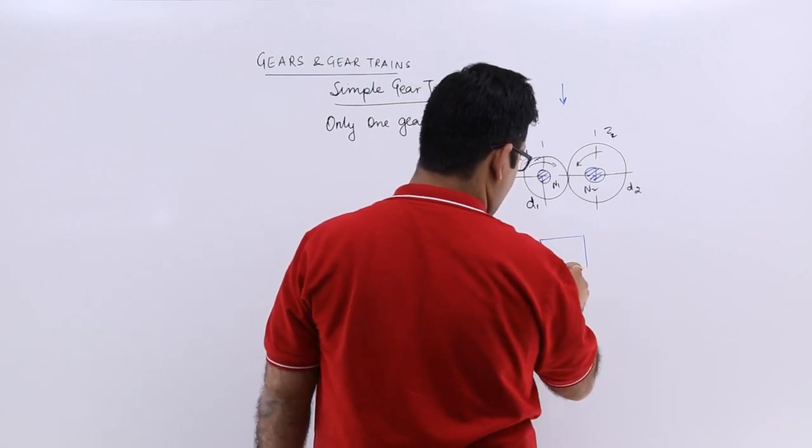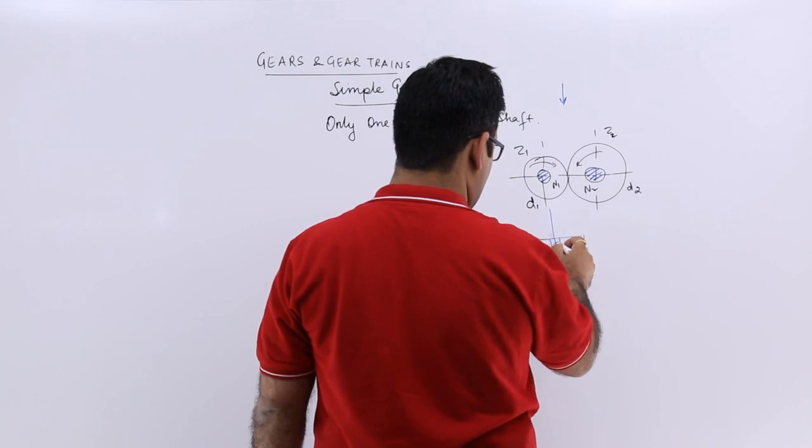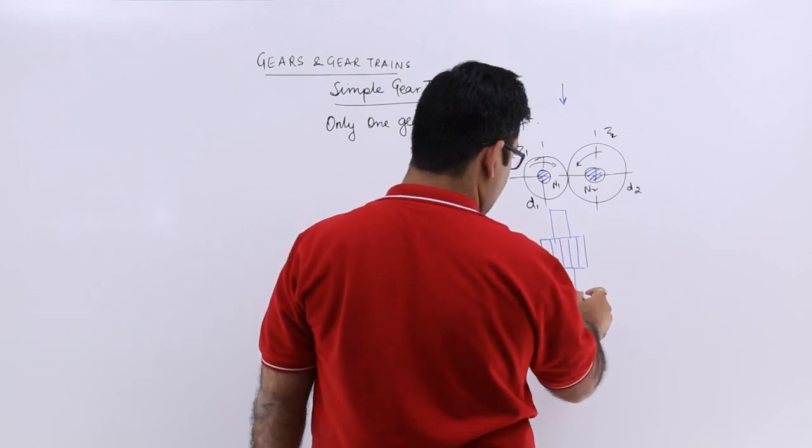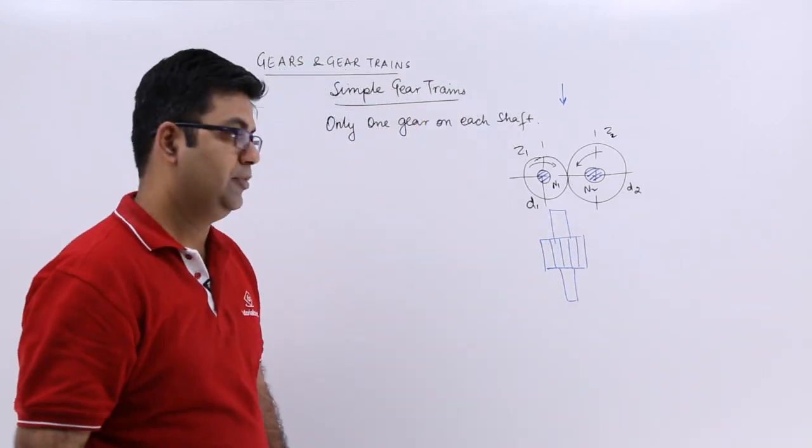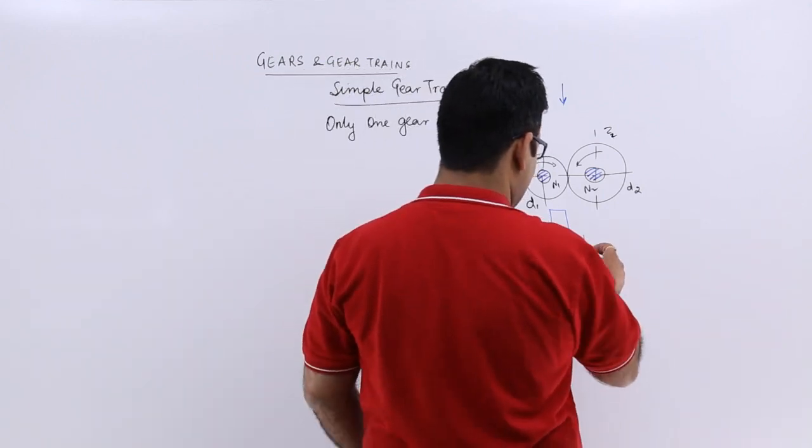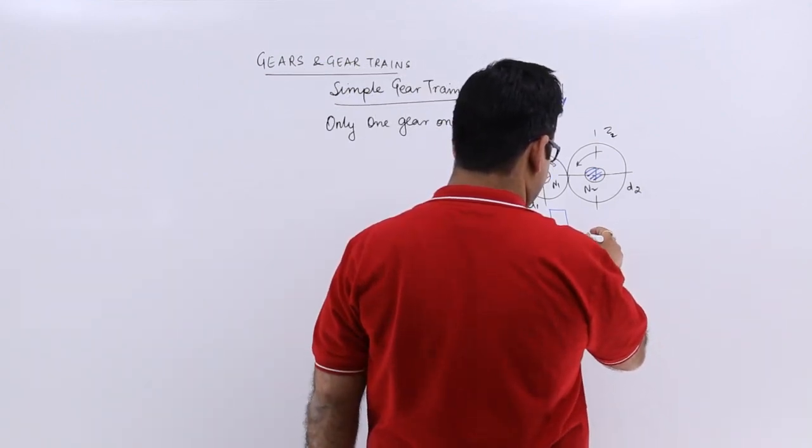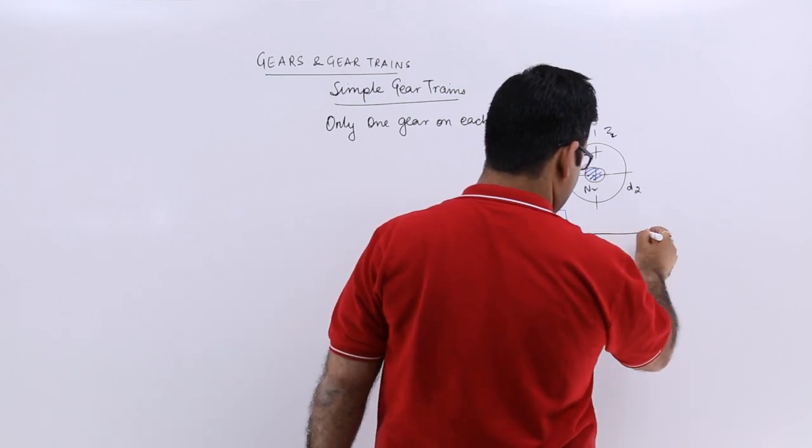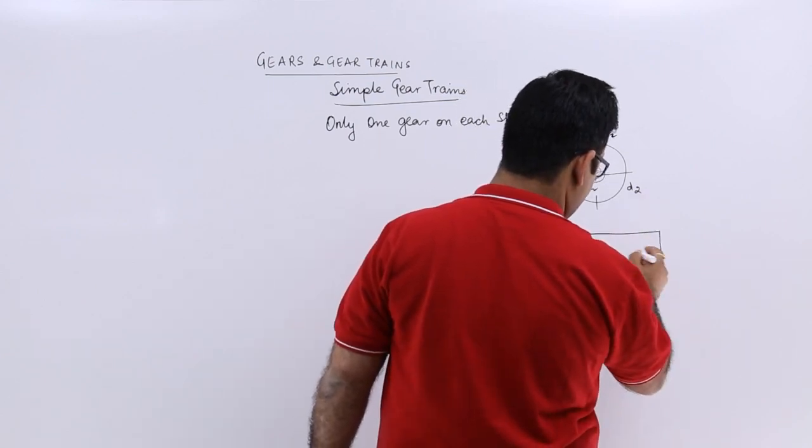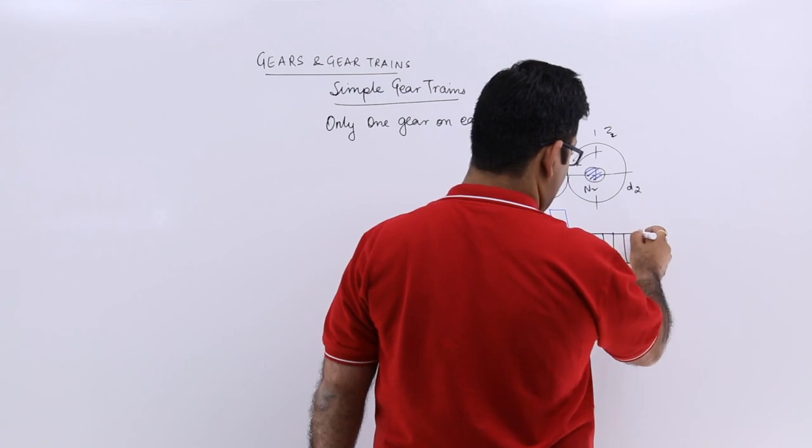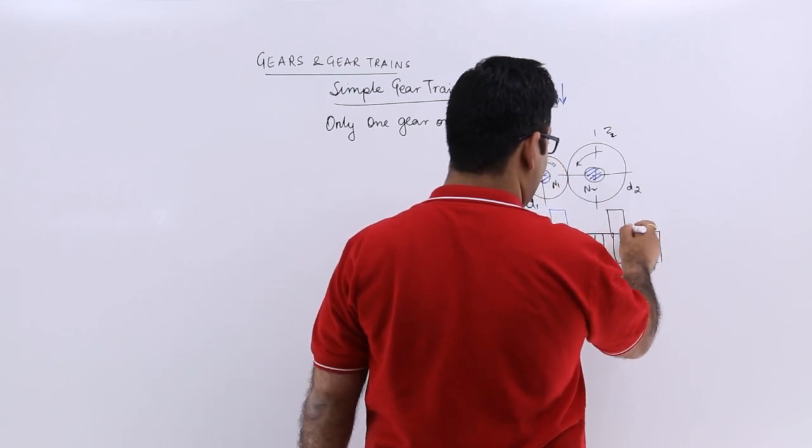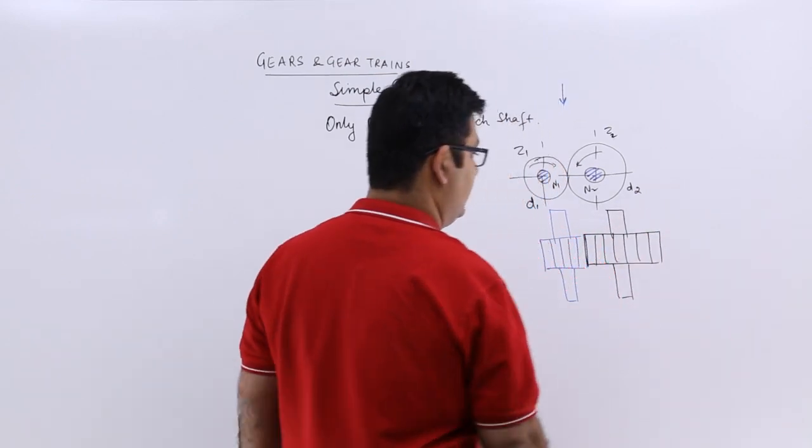This is the first gear, this is the shaft on which this gear is mounted and you have the second gear, slightly bigger gear like this. And this is the shaft on which this gear is mounted.